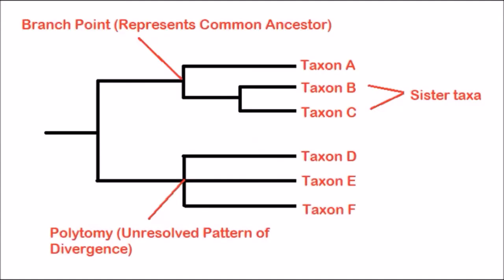In a phylogenetic tree, you start with one species and it can branch apart into more and more species. Each of these branching points is called a branch point, and each branch point represents a common ancestor. So the common ancestor of taxon A, taxon B, and taxon C is found at the branch point connecting them, and the common ancestor of all taxons in the tree is found at the base.